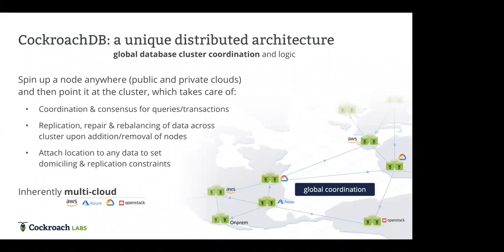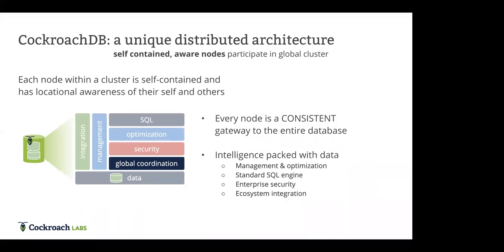At the core of what we do: we can deliver distributed SQL, coordinating consensus of queries and transactions across global scale, but also within a single data center. We automate the replication, repair, and rebalancing of nodes as they go down or come up. Attaching location and being an inherent multi-cloud solution is one of the key reasons people choose CockroachDB — implementing a single database that spans across multiple different clouds.